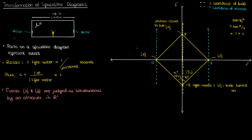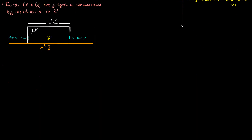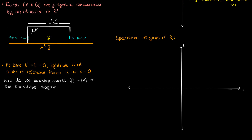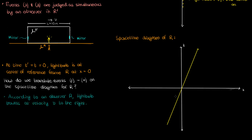Now let's see what happens in the spacetime diagram in reference frame r, which corresponds to the reference frame of an outside observer standing on the ground. We'll also suppose that observers in r and r' synchronize their clocks to 0 when the light bulb crosses x equals 0 in r. In this diagram, t is on the vertical axis and x is on the horizontal axis. According to an observer in r, the light bulb travels at velocity v to the right, so the world line of the bulb will be a diagonal line, with its angle from the vertical axis equal to v.